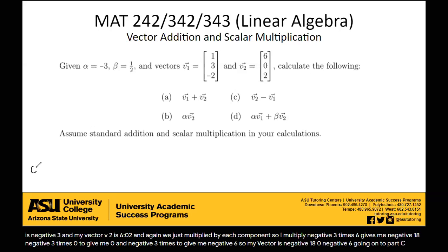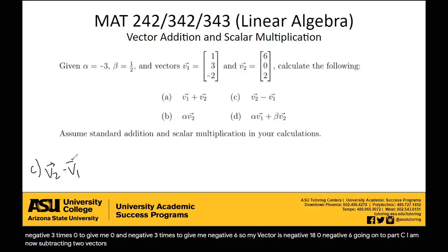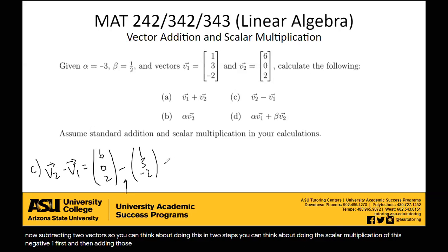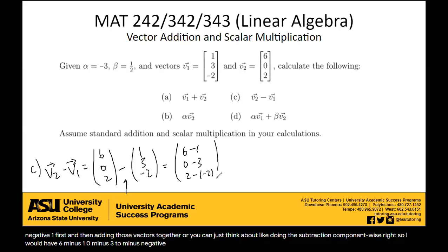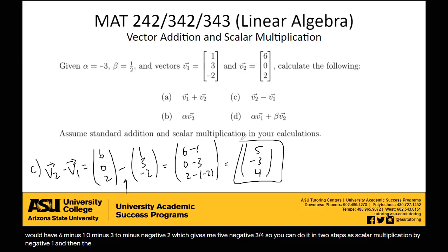Going on to part C, I am now subtracting two vectors. So you can think about doing this in two steps. You can think about doing the scalar multiplication of this negative 1 first, and then adding those vectors together. Or you can just think about doing the subtraction component-wise. So I would have 6 minus 1, 0 minus 3, 2 minus negative 2, which gives me 5, negative 3, 4. So you can do it in two steps or just do the subtraction component-wise.